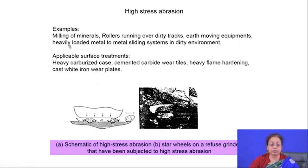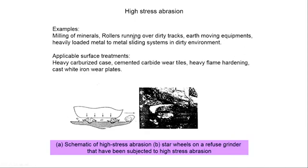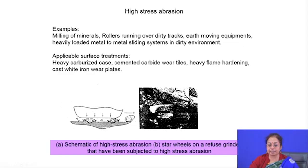When you see the characteristic features of high stress abrasion, you find scratch marks along with groove formation on the surface indicating micro-deformation and subsequent failure. Gouging abrasion is a different type — it occurs when the component is subjected to very heavy load for a very short period of time, i.e., impact loading. Examples include gyratory crushers, hammer mills, ball mill parts, and agricultural equipment in rocky soils.